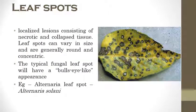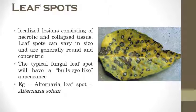The next one is leaf spots. The name indicates spots on leaves. In technical terms, a bull's eye-like appearance can be observed on leaves. Initially black or brown color spots appear, and later slowly extend to look like a bull's eye pattern. The best example is Alternaria leaf spot which is caused by Alternaria solani.